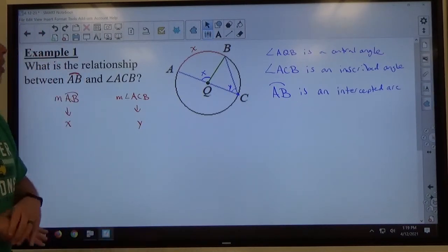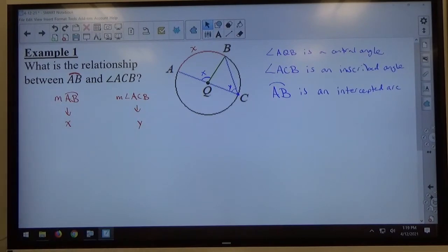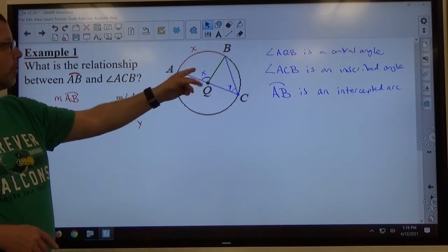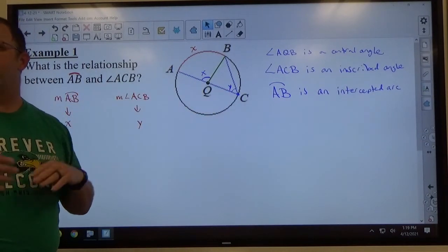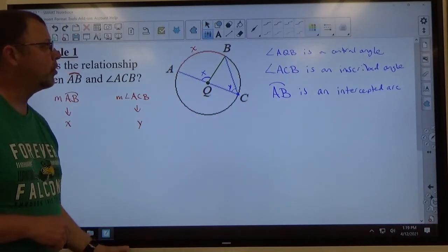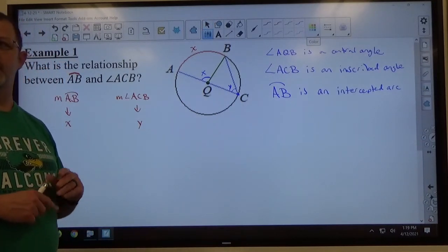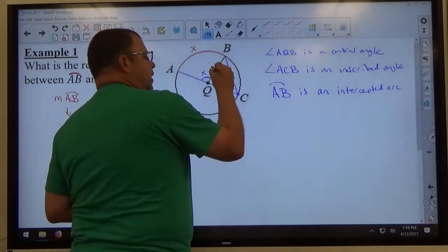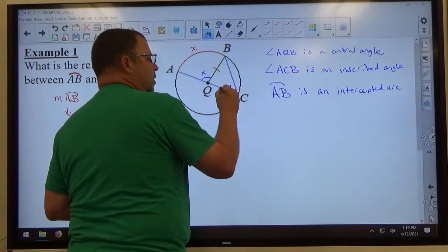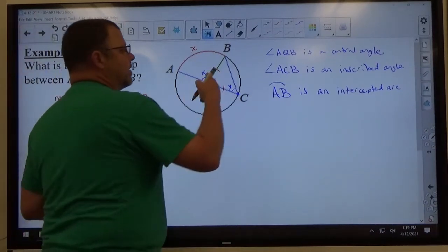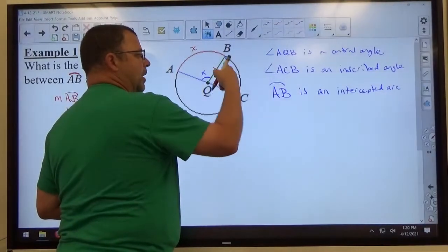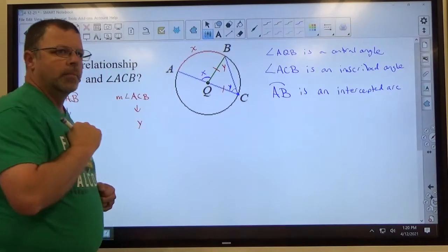Now, a couple things I know about this picture at this point. I know both of those - this measure's X, this measure's X. This is some different measure because we don't know for sure they're the same. I know that BQ is a radius, AQ is a radius, and CQ is a radius. So if they're all radii, that means that BQ is the same length as CQ. And if those two sides are equal, congruent sides, that makes that an isosceles triangle, which means that this angle up here has to be the same as this angle down here. So angles B and C are both going to be the same measure.